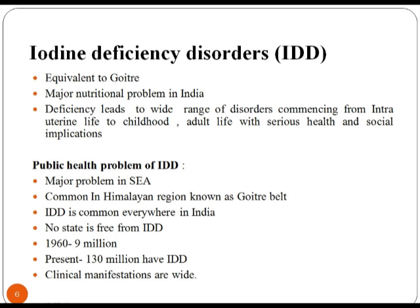Iodine Deficiency Disorder. Iodine is an essential trace element. The thyroid hormones thyroxine contain iodine. Iodine deficiency gives rise to goiter, which results in developmental delays and other health problems. If your diet is deficient in iodine, your thyroid gland will enlarge as it tries to increase the production of thyroid hormones, causing a mass in the neck known as goiter. Public health problems of iodine deficiency disorders are a major problem in the Southeast Asia region, and are common in the Himalayan region, known as the goiter belt. Iodine deficiency disorder is common everywhere in India.